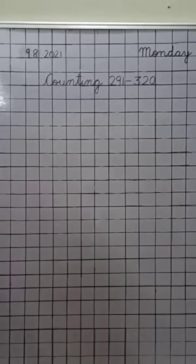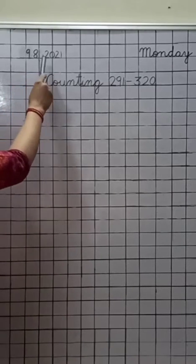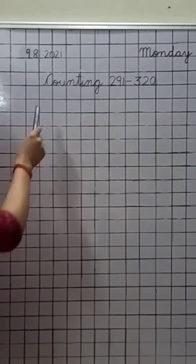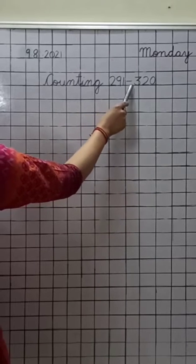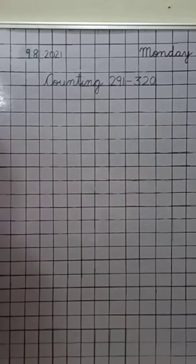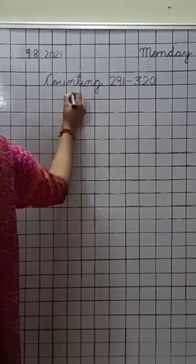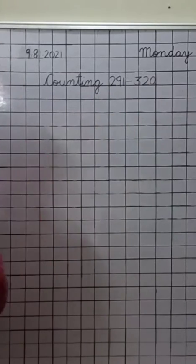Now dear children, write down date 9.8.2021 and write down day, that is Monday. Now write down the heading of counting 291 to 320. After writing the heading, you are to leave this whole line. Okay? Now are you ready? So quickly let us start.